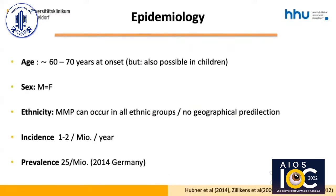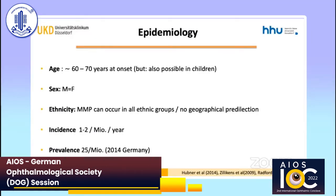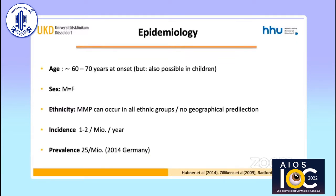Let's start right away with some epidemiology. MMP typically occurs in the elderly with a mean age between 60 and 70 years at the time of diagnosis. However, the age of onset may be younger since most patients with early stages of MMP can remain undiagnosed. The ratio male versus female is about equal. No geographic or racial predilection has been described. The incidence of MMP is estimated at approximately one to two new cases per million people annually in Germany and France, and in 2014 the calculated prevalence of MMP was 25 cases per million inhabitants.